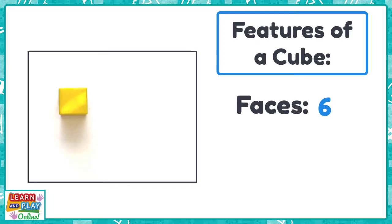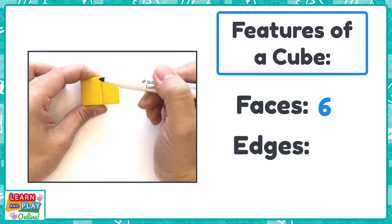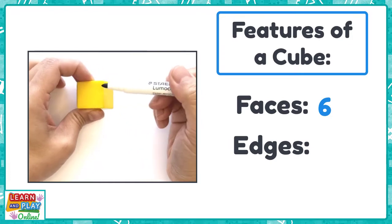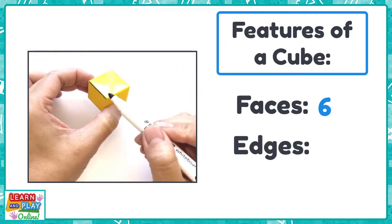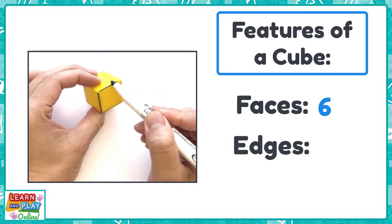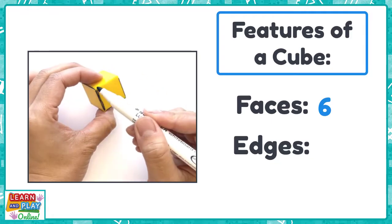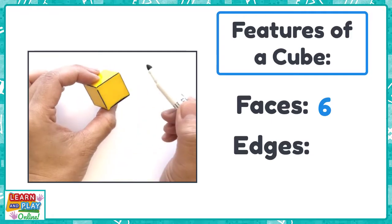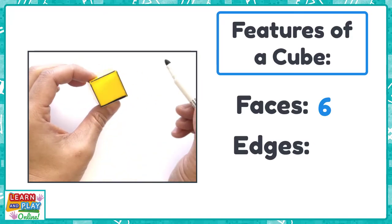The next feature we are going to count on a cube are the edges. One, two, three, four, five, six, seven, eight, nine, ten, eleven, and twelve. A cube has twelve edges.